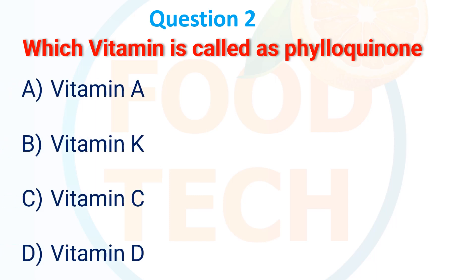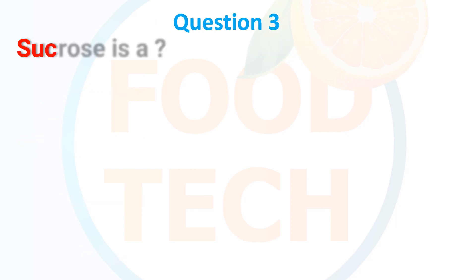Question 2: Which vitamin is called phylloquinone? A. Vitamin A, B. Vitamin K, C. Vitamin C, D. Vitamin D. The answer is B. Vitamin K.